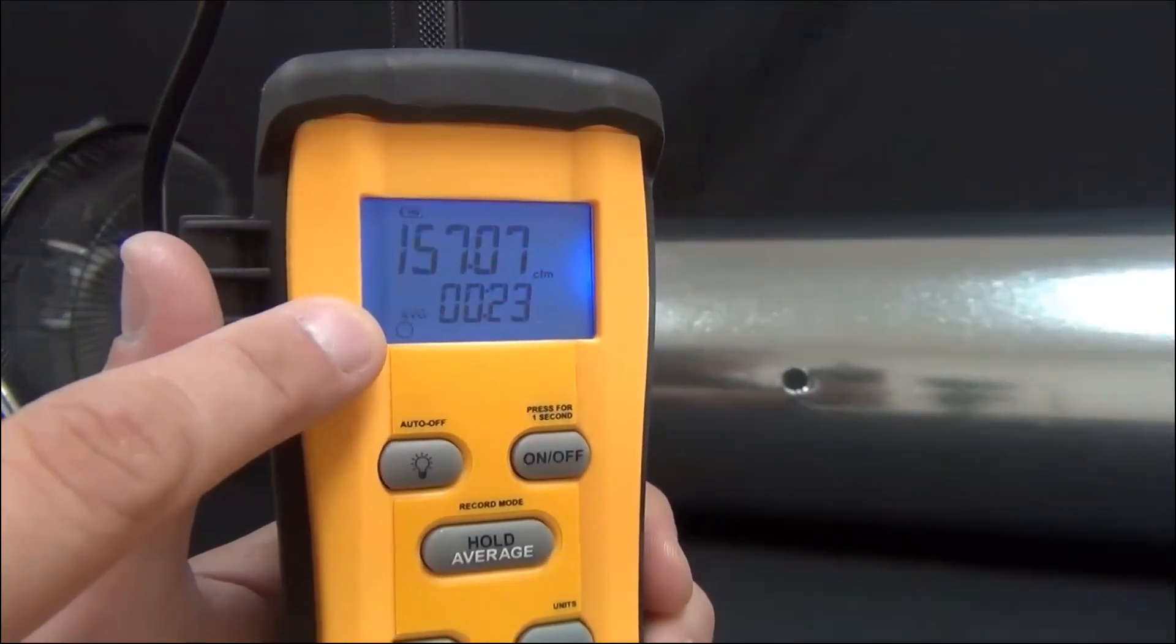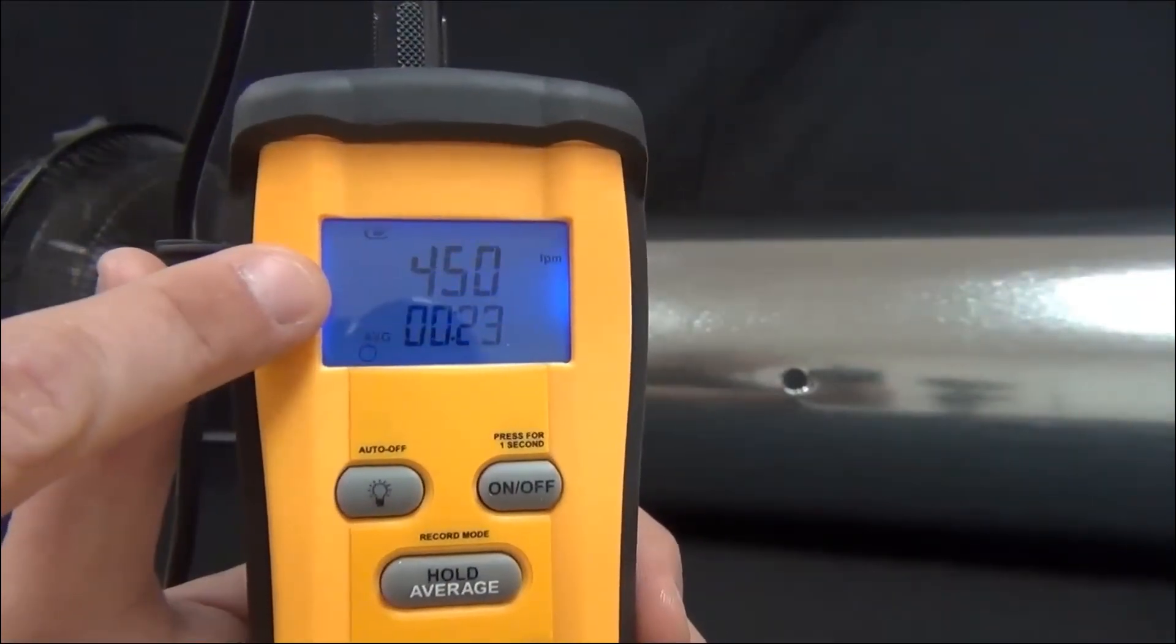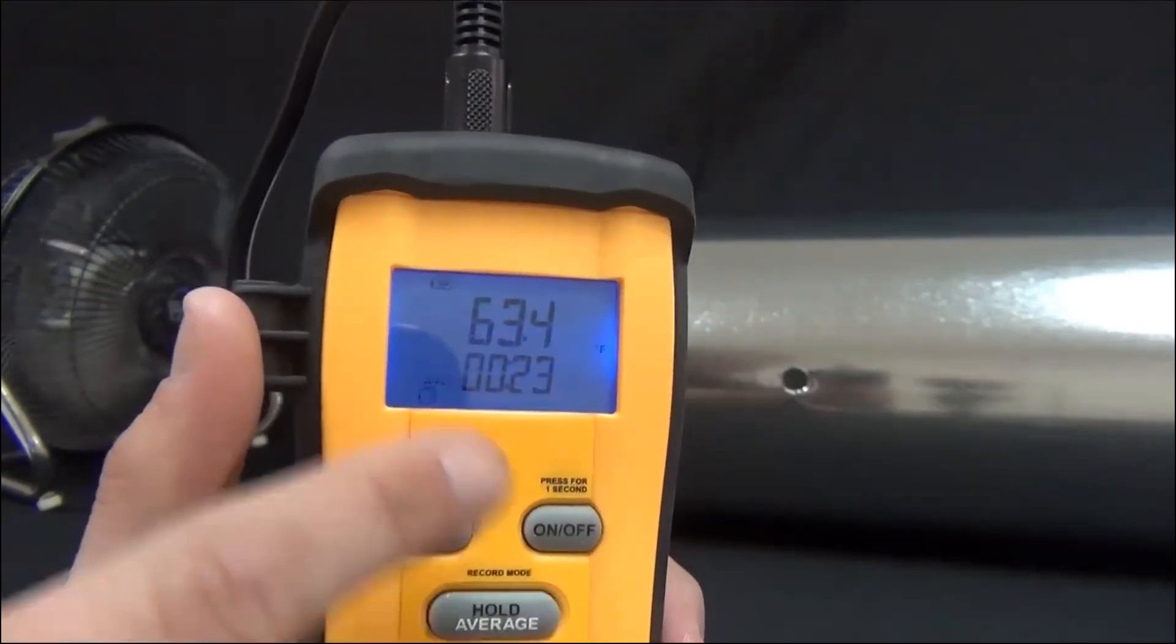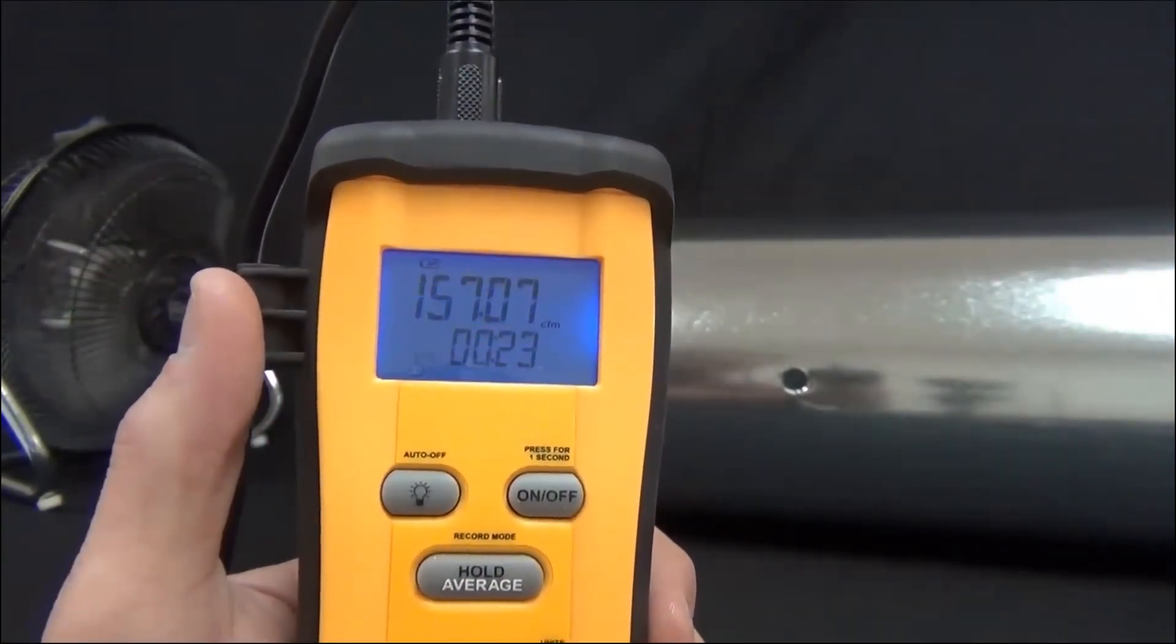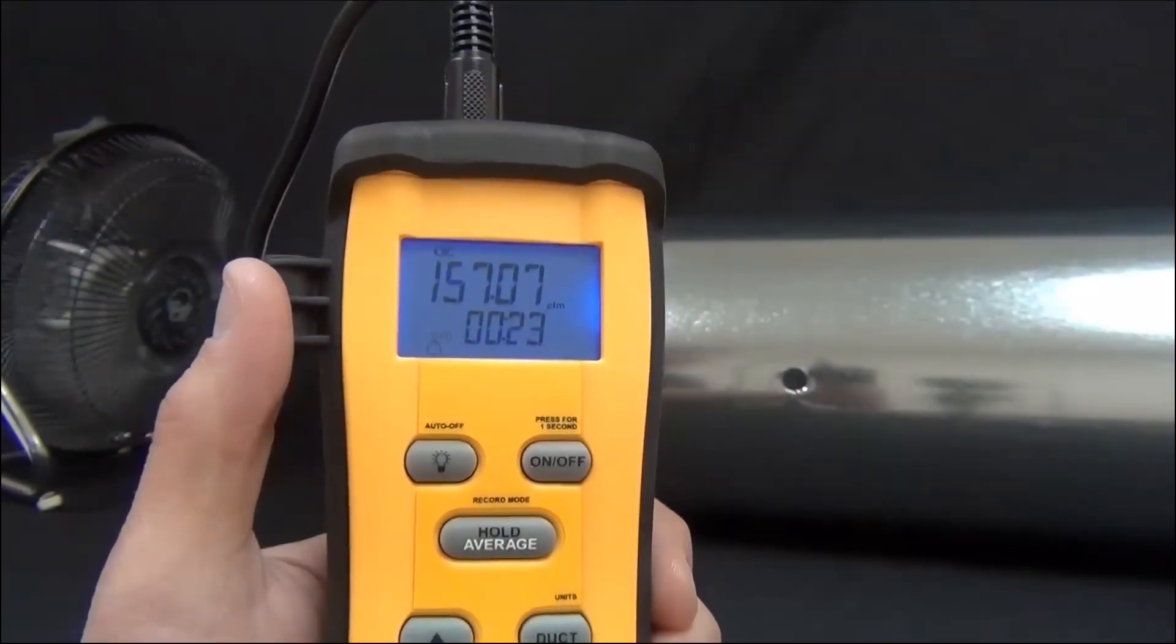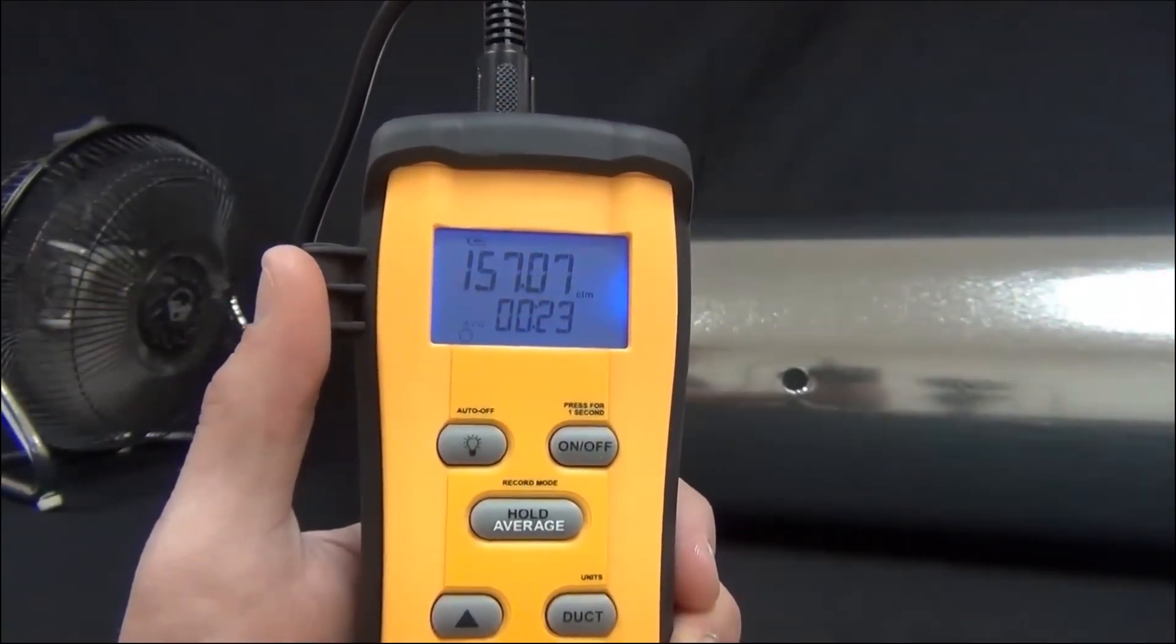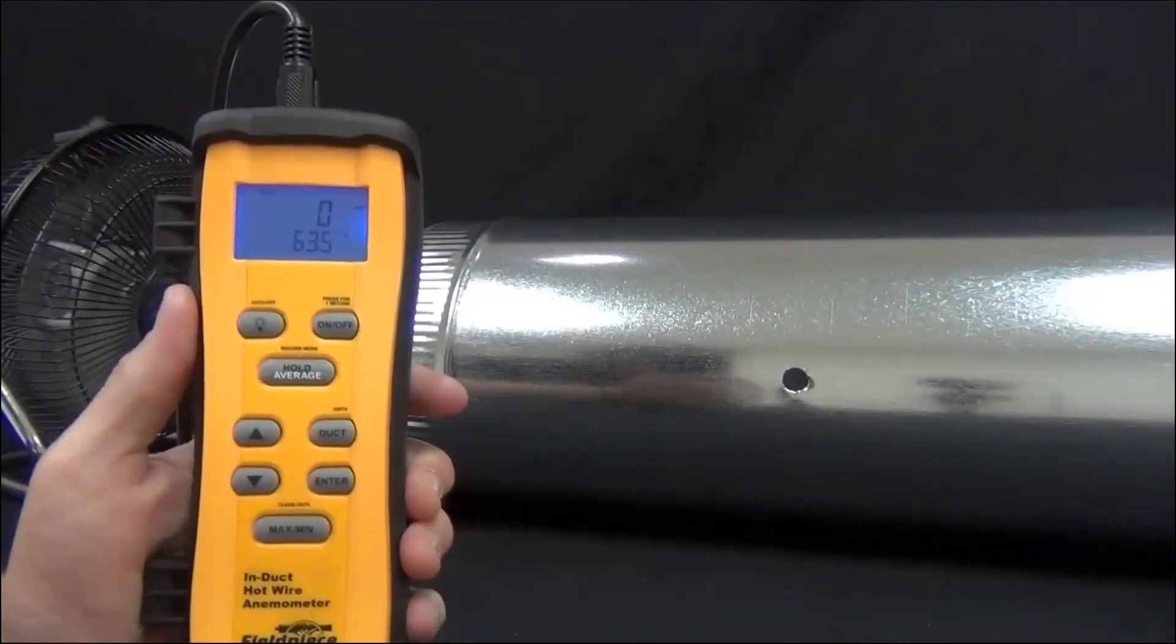And I can press up if I want to see my feet per minute. So an average of 450 and up again to see my average temperature. And back to average CFM. So that way we knew that we had an accurate CFM in the duct across the entire duct, not just on one side of it or in one spot.